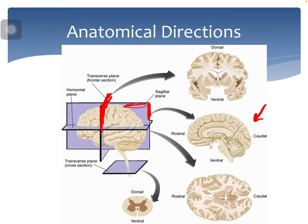If we look at the transverse plane — cutting from the top of the brain all the way down — you get something that in MRI we call the coronal slice. That's just a different perspective of the brain. Here you can see all the white matter, and the gray matter here in the cortex.